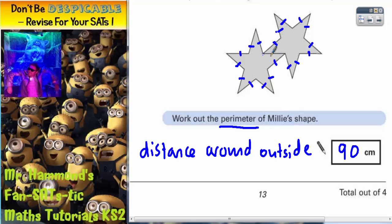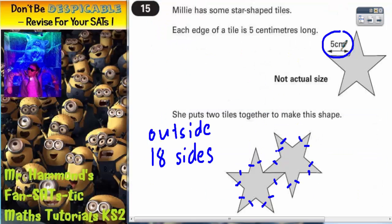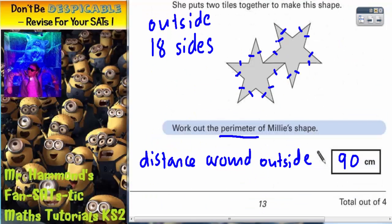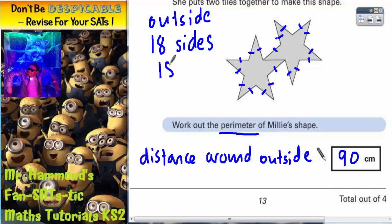I haven't counted this because this is on the inside of the shape and the perimeter is only the outside. So on the outside of that shape there are 18 sides. But we know from the question that each side is worth 5. So it's 18 lots of 5. So we could have just counted up the sides and done 18 lots of 5.